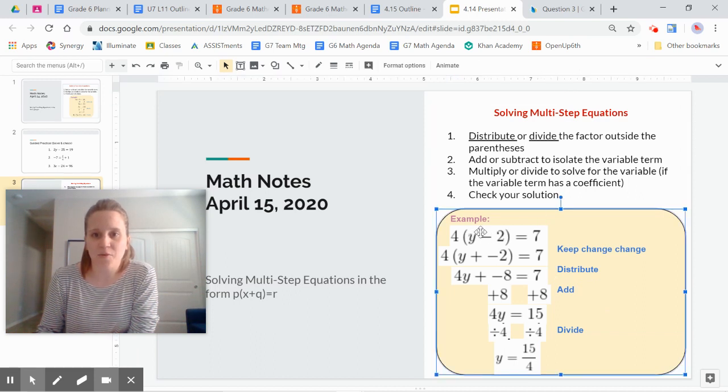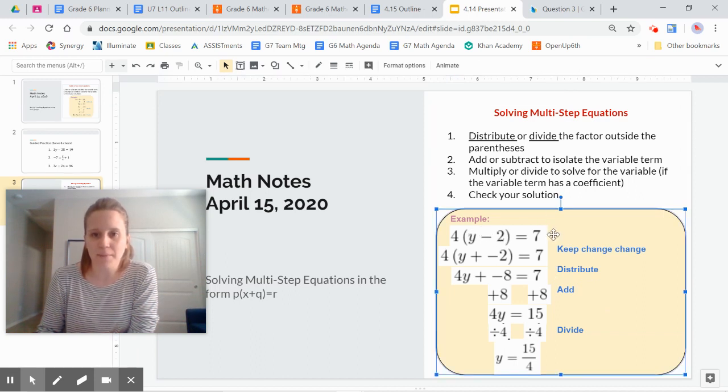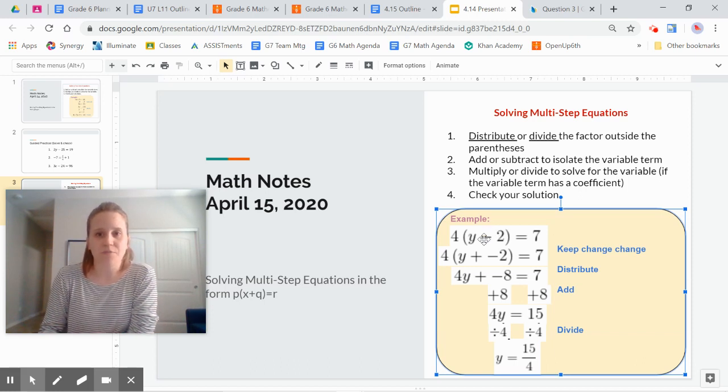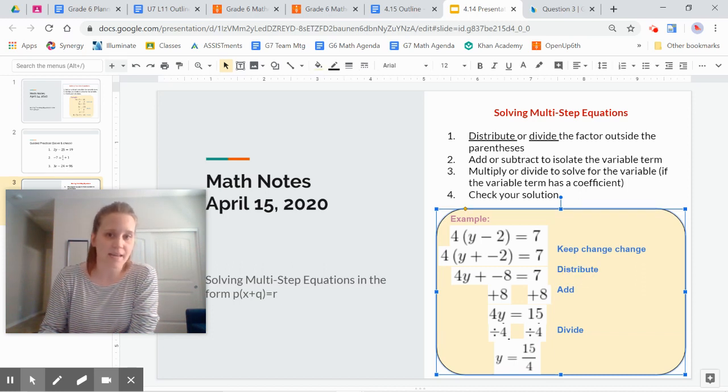So here's the example. Here is what an equation might look like in this format. I notice there are grouping symbols. I notice also there's subtraction. So I went ahead and rewrote this using keep, change, change so that everything was addition. That helps me when I use the distributive property. And that is the choice that I decided to make. I decided to distribute in this one instead of dividing.